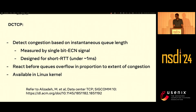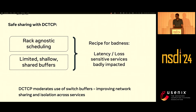DCTCP was readily available in the Linux kernel for us to experiment with. Meta operates over 20 data centers with varying hardware configurations. Zooming into one data center, we have thousands of services running in a shared server pool. Service scheduling can cause latency and throughput-sensitive services to coexist on a single rack, and these racks can also have shallow buffers. We believe DCTCP can help here by moderating the switch buffer usage. We had done extensive small-scale experiments and published some of this in an LPC talk in 2018.